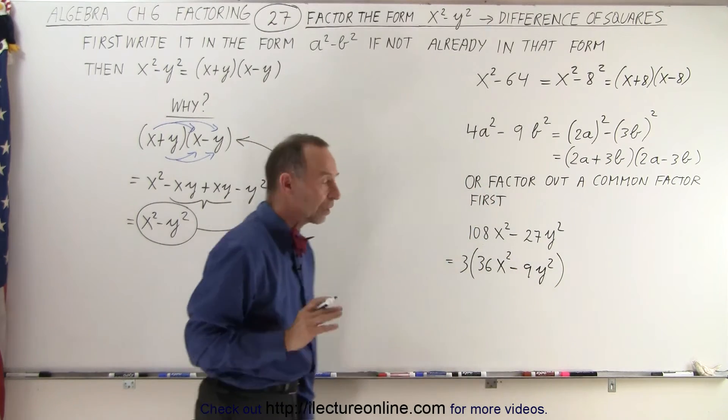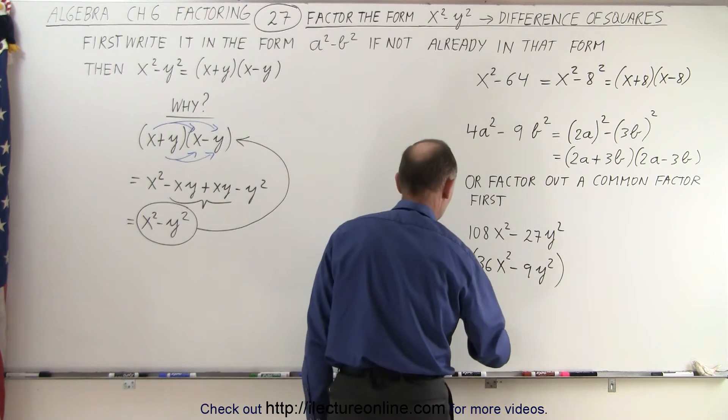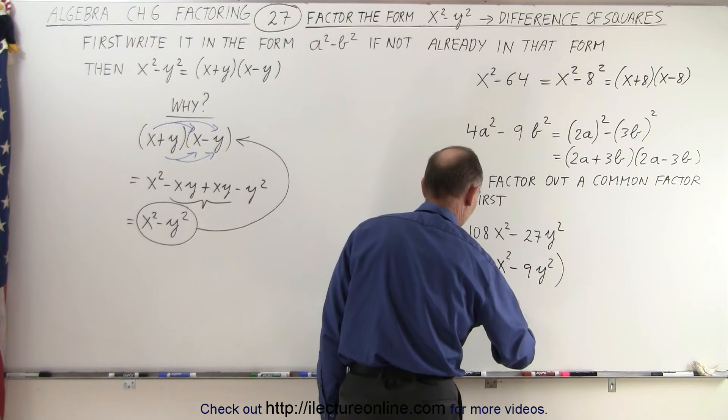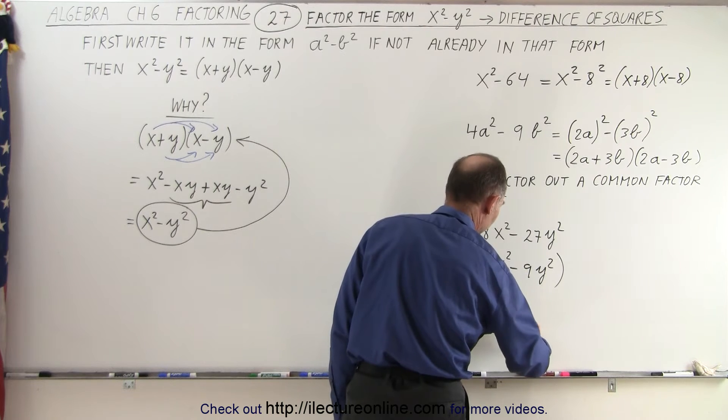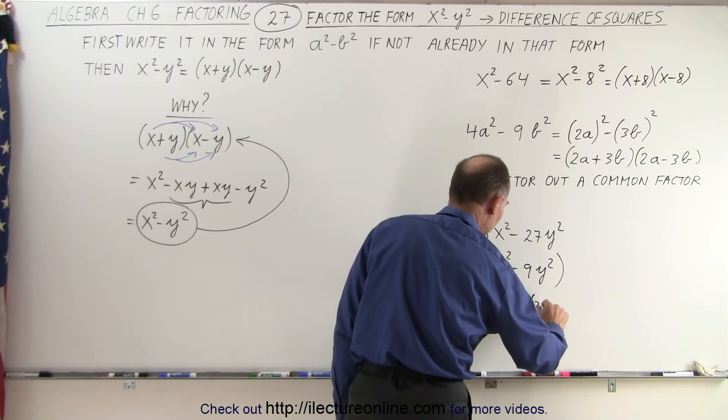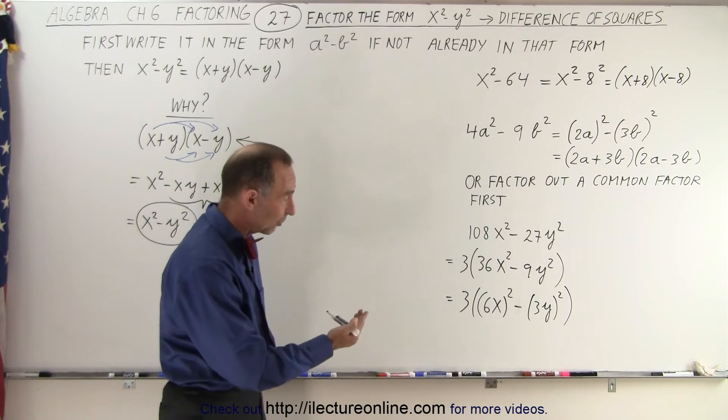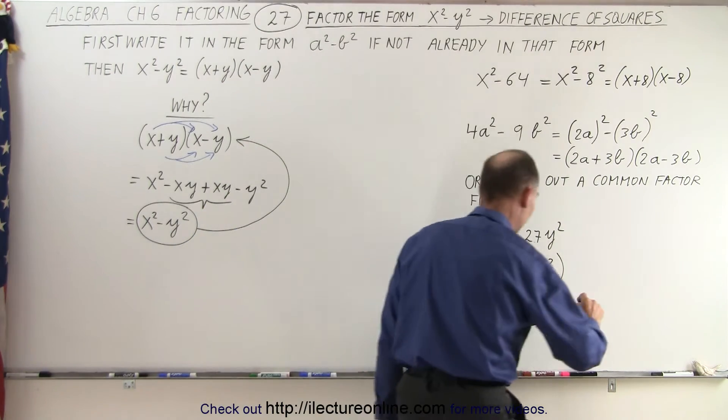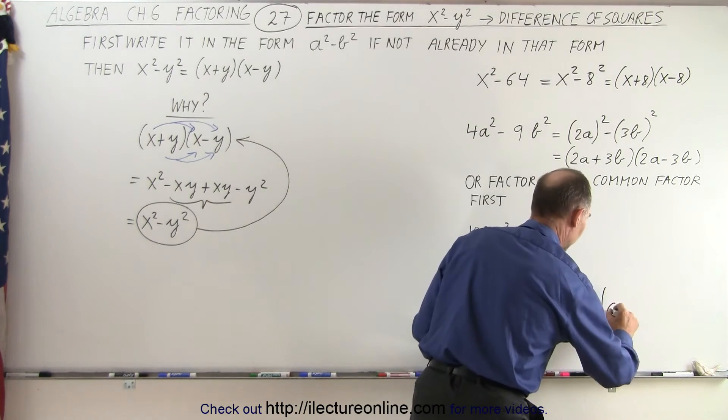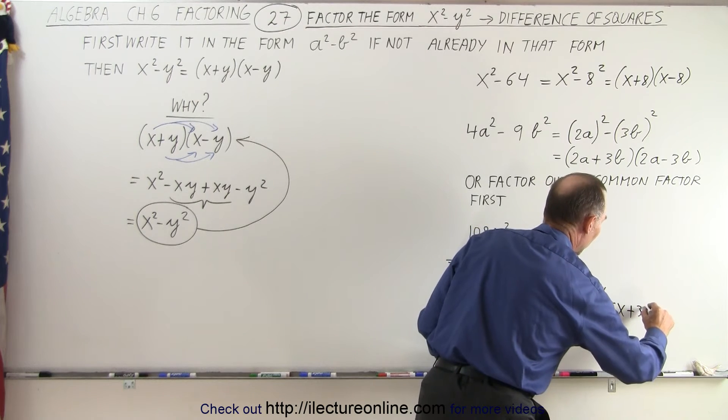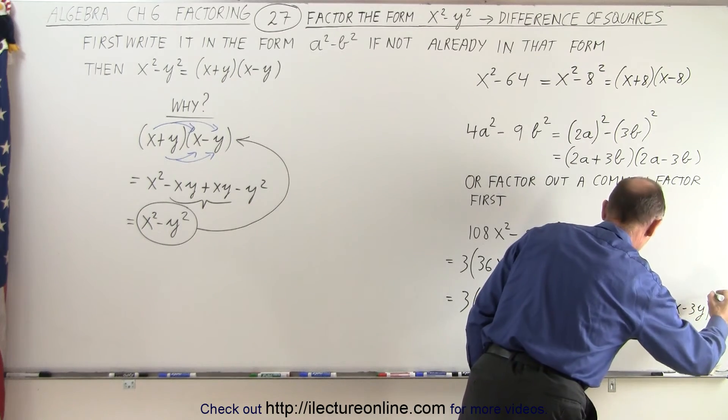So now, if you take a look at that, 36 is 6 times 6 and 9 is 3 times 3. So this can be written as 3 times 6x squared minus the quantity 3y squared, like this. And then you realize that's the difference of squares, which could be factored as follows. This can be factored as being 3 times 6x plus 3y times 6x minus 3y, like this.